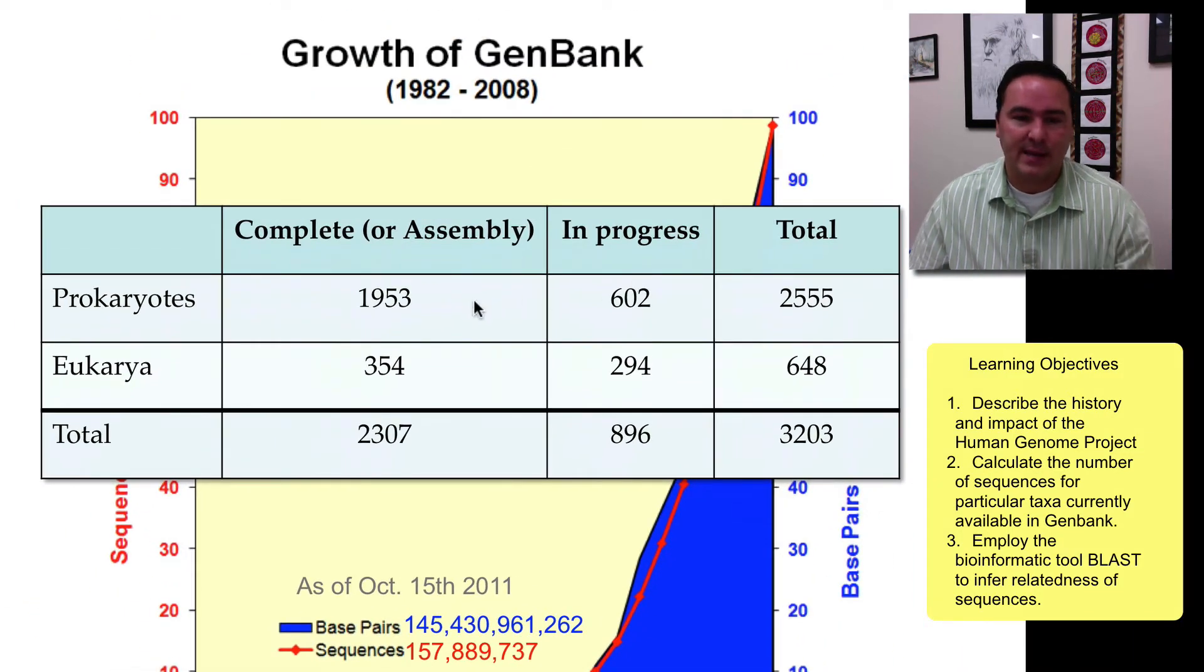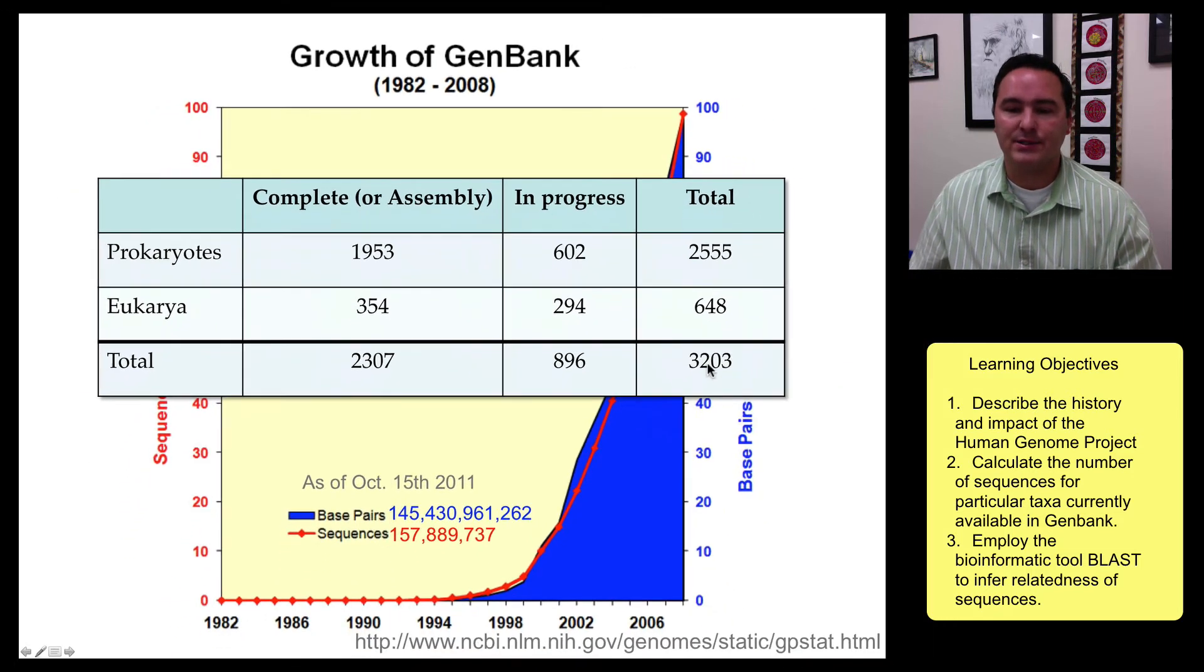At that same time, I looked at the number of prokaryotes that had been completely sequenced, and the ones that were in progress for a total of 2,500, and the number of eukaryotes at about 650, so well over 3,000. I think we're approaching about 5,000 total right now.